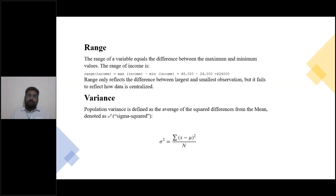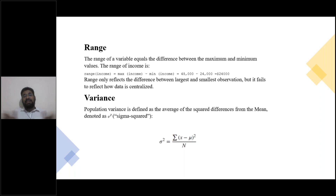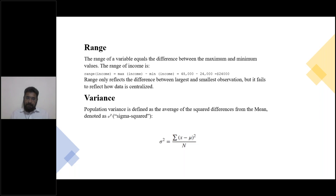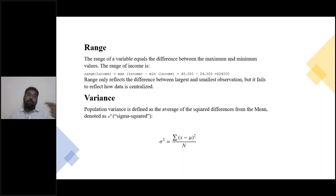Measures of variability include range and variance. Range: when you subtract the minimum value from the maximum value you get the range. If 10 people in a room have a minimum height of 5 feet 2 inches and a maximum of 6 feet 2 inches, the difference is 1 foot — that 12 inches is your range. Variance is different: you subtract each value from the arithmetic mean, square it, sum all those squared differences, and divide by n — the average of the squared differences. It's denoted as sigma squared (σ²) in statistics.